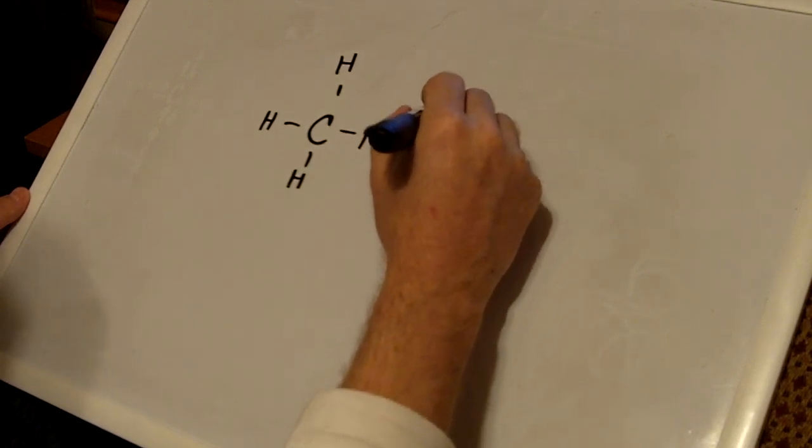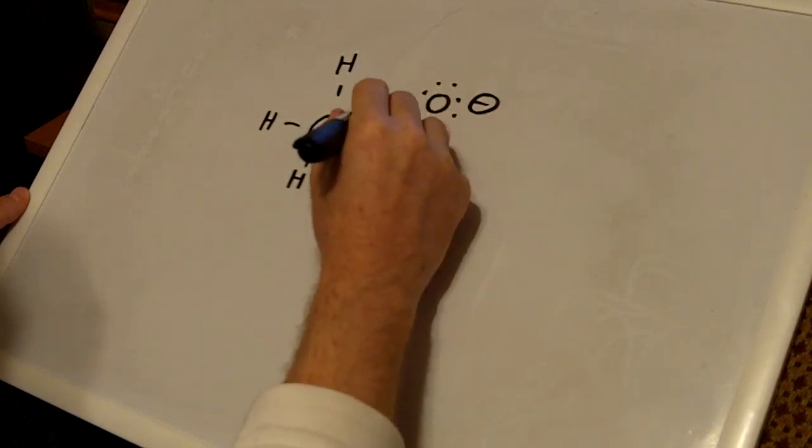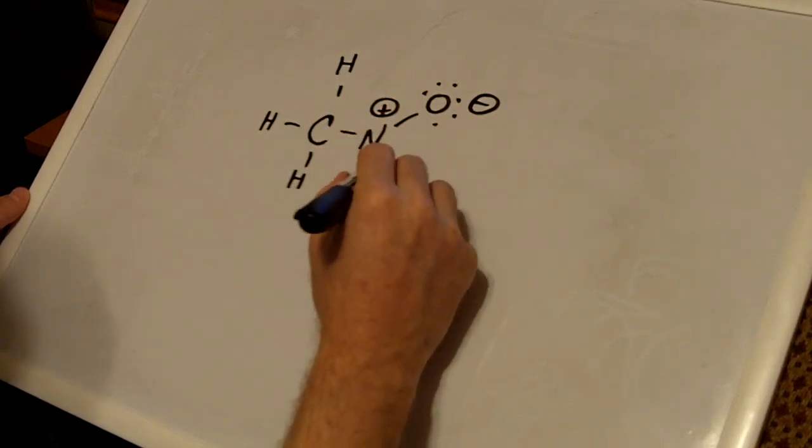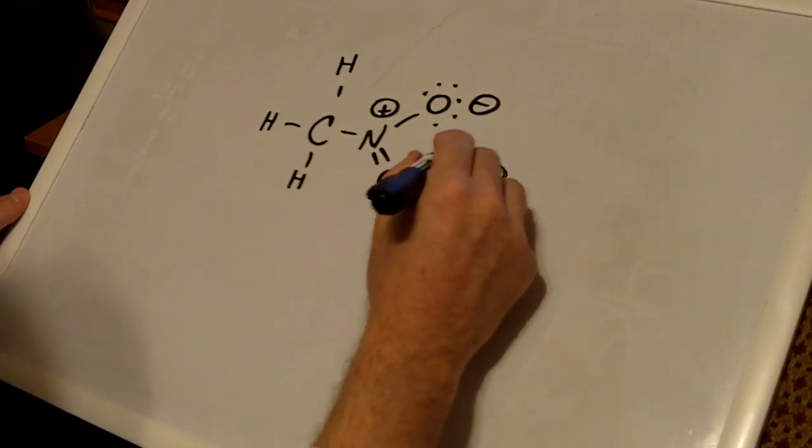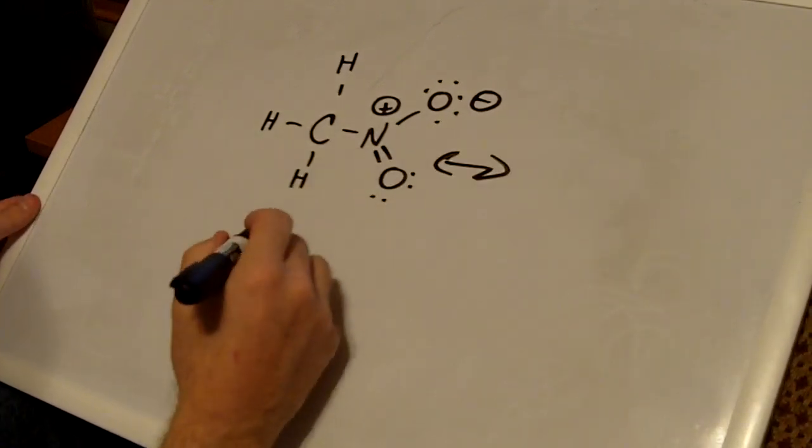It's usually written like this. The negative charge here, a positive charge here, a double bond here, and then its resonance hybrid structures.